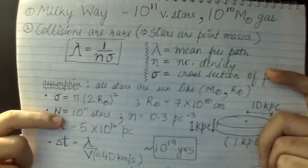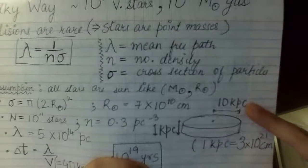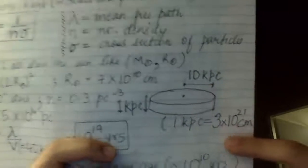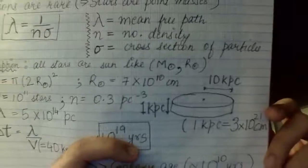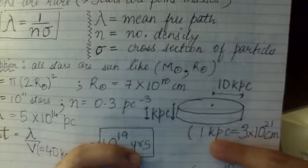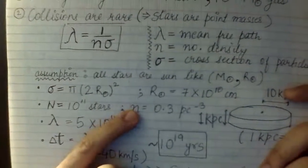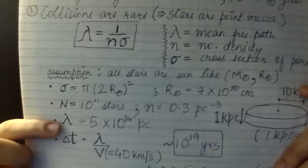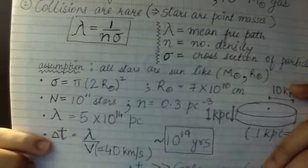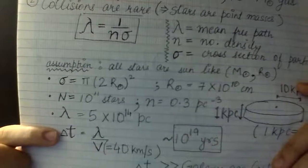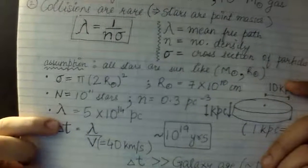Considering 100 billion stars, we model our galaxy as a perfect disk with thickness 1 kiloparsec and radius 10 kiloparsecs. Note that 1 kiloparsec equals 3 times 10 to the power 21 centimeters — we work in kiloparsecs since galaxies are huge. From this disk geometry, we get the number density n, and plugging into the mean free path formula gives us lambda. The average time between two collisions is then lambda divided by v, where v is the random velocity.